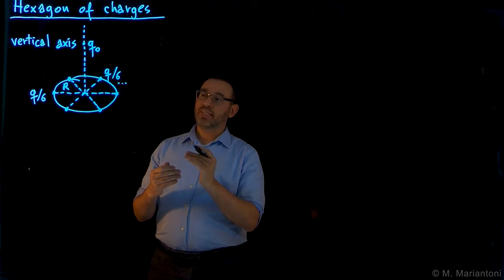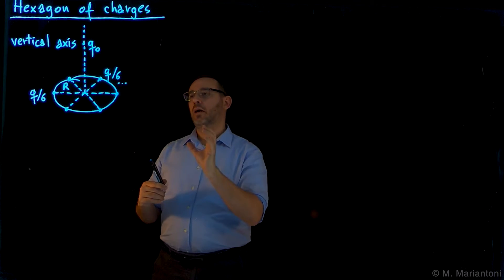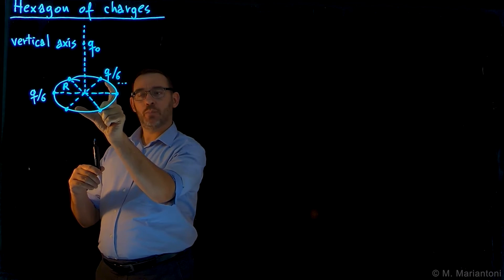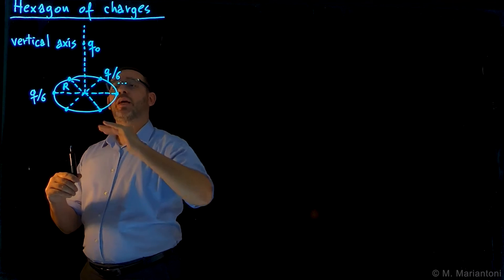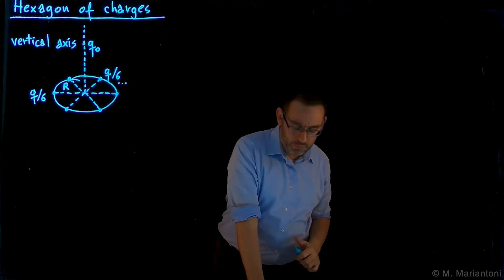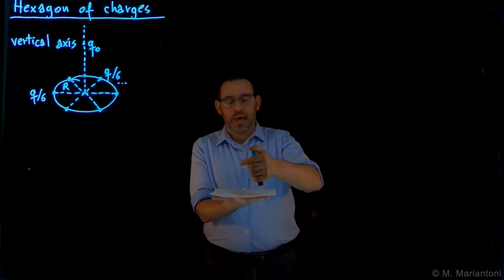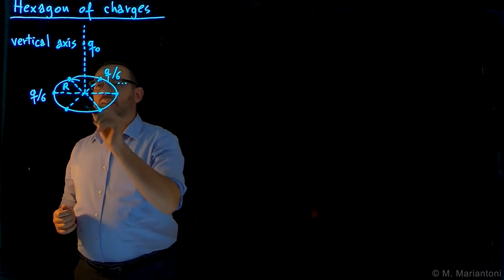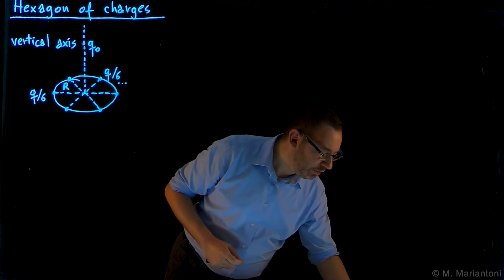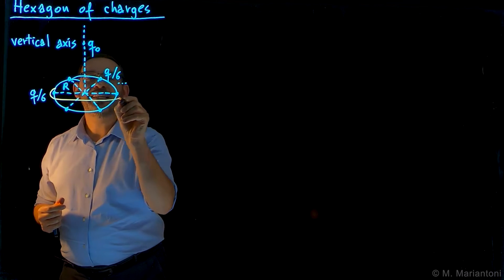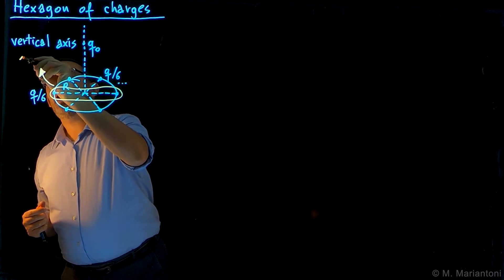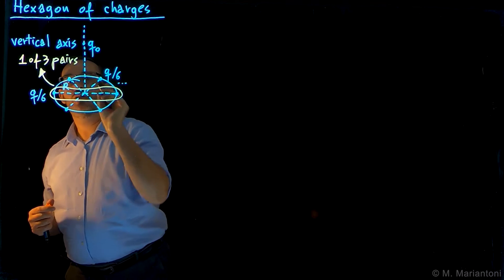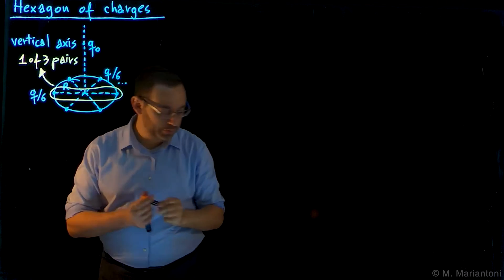Now let's re-sketch this same system, but looking at it from the side. I could pick any pair of opposite charges — this pair, or this pair, or this pair — and look at the structure from the side. This is our circle with the hexagon in it, and this is the vertical axis. I can choose any of these diameters. Let's choose this one — one of the three pairs of opposite charges.